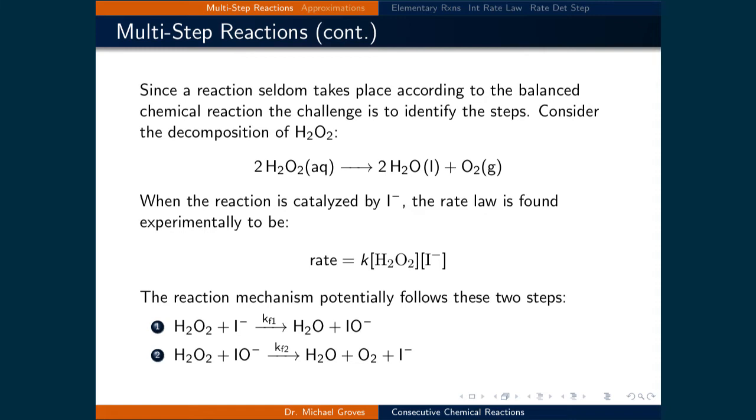Consider the decomposition of hydrogen peroxide where 2H2O2 decomposes into 2H2O and O2. When the reaction is catalyzed by iodide ions, the rate law is expressed as rate = k[H2O2][I-].